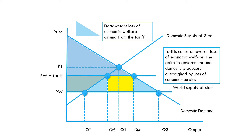But what's happened to these two remaining areas of lost consumer surplus? The answer is that these losses in consumer surplus are not offset — they are not gained by anybody else. So these are deadweight losses, or net welfare losses, arising from the introduction of the tariff. This is why, as economists, we would always argue against the introduction of tariffs: the negative effect on consumers is not offset by the gains to the government and the producers.